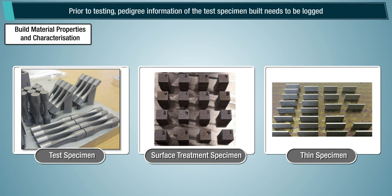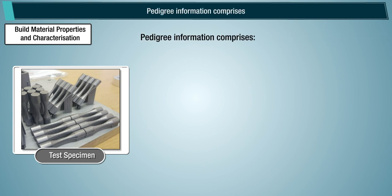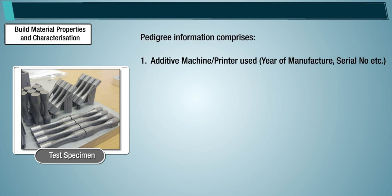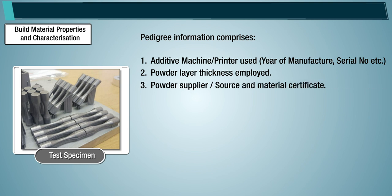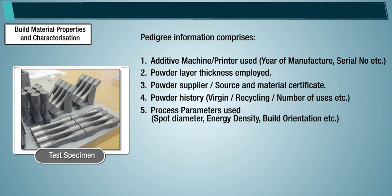Prior to testing, pedigree information of the test specimen build needs to be logged. Pedigree information comprises: the additive machine and printer used, year of manufacture, serial number, etc.; powder layer thickness employed; powder supplier, source, and material certificate; powder history including version, recycling, number of uses, etc.; process parameters used such as spot diameter, energy density, and build orientation; and hatch and contour strategies and settings.